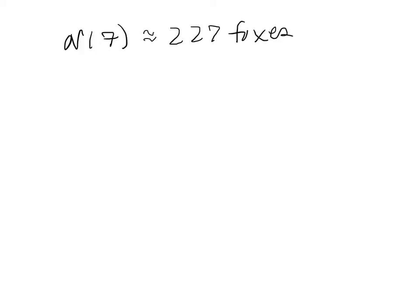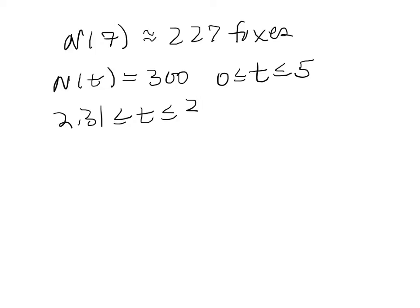And we want to know when is this function less than 300. And so if you look at the graph, if we figure out when is n of t equal to 300 under the condition that t is between 0 and 5, we get that t has to be between 2.31 years and 3.49 years. And that's when the population goes below 300.